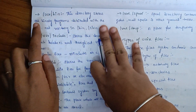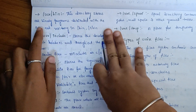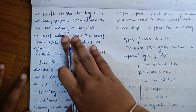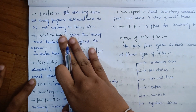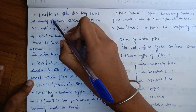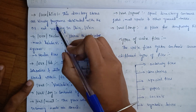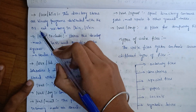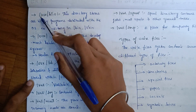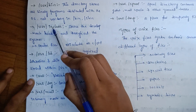The /usr/bin directory stores all binary programs distributed with the operating system, not residing in /bin. /usr/include stores development header files used in C and C++ programming — these are the header files you reference with hash include.